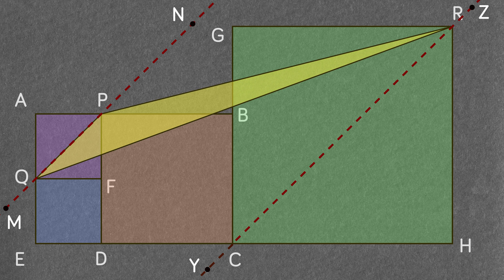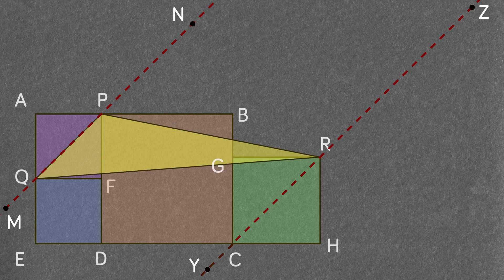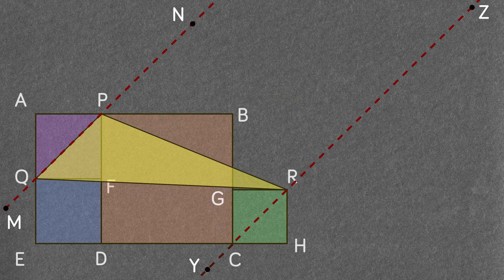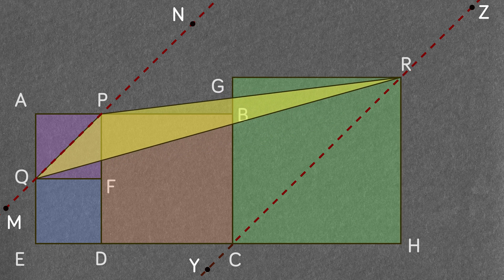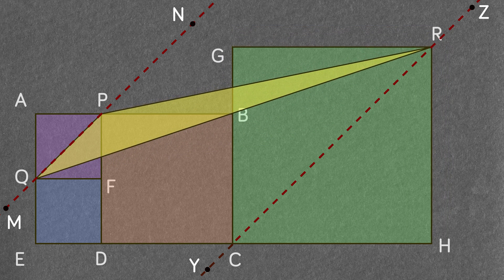Now, as we can see, no matter what the size of the rightest square, point R will always lie on line YZ giving a constant perpendicular distance between lines MN and YZ.